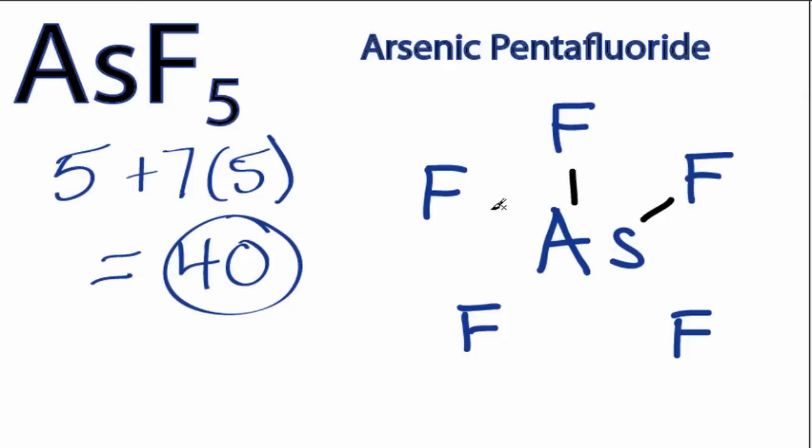We'll put chemical bonds between the arsenic and the fluorine atoms. There are 2 electrons in each chemical bond, so we've used 2, 4, 6, 8, 10.